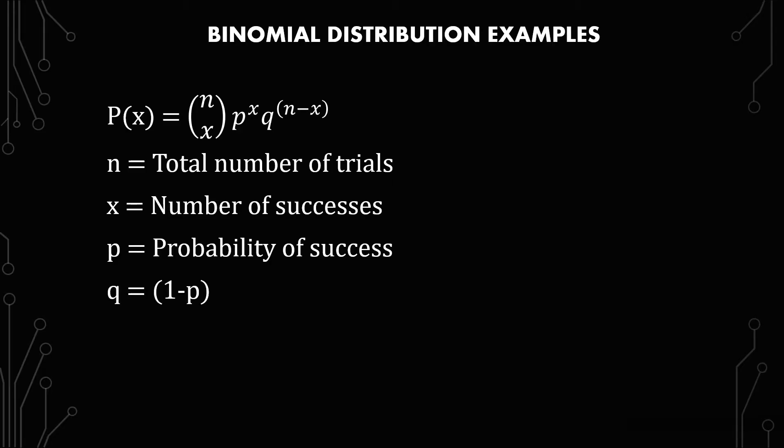q is 1 minus p, or the probability of failure. And then we have n of x, which is n factorial over x factorial times the quantity n minus x factorial. So that's to help with understanding what the binomial coefficient is or the combination.